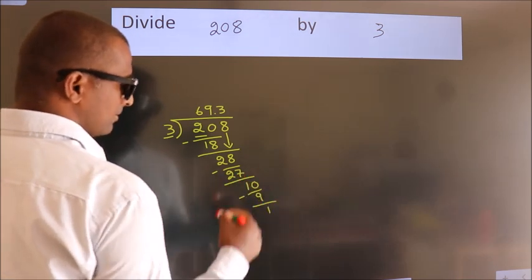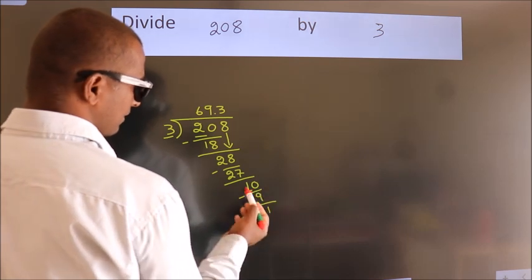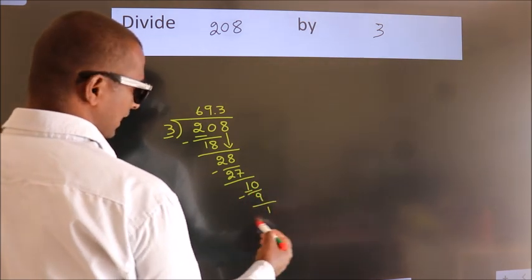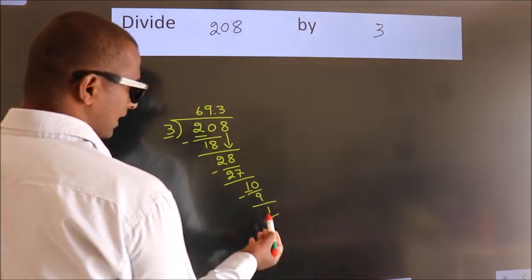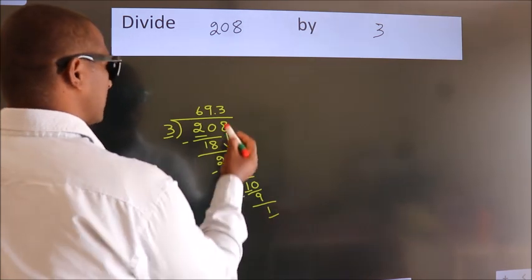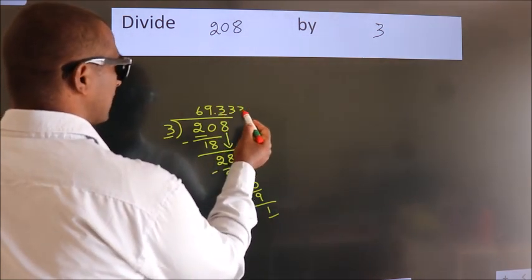Now you observe. We had 1 here, and we got 1 again. That means this number keeps on repeating.